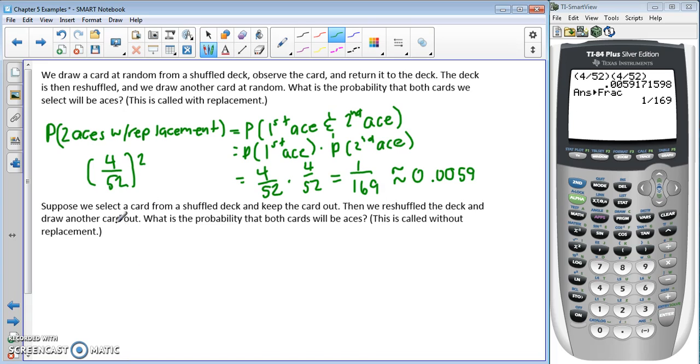Next, we're drawing a card from a shuffled deck, keeping the card out, then reshuffling the deck and drawing another card. What's the probability that both cards are aces? This is called without replacement.